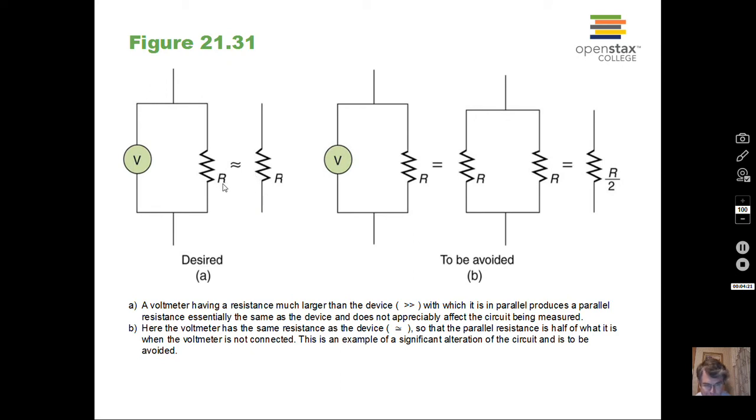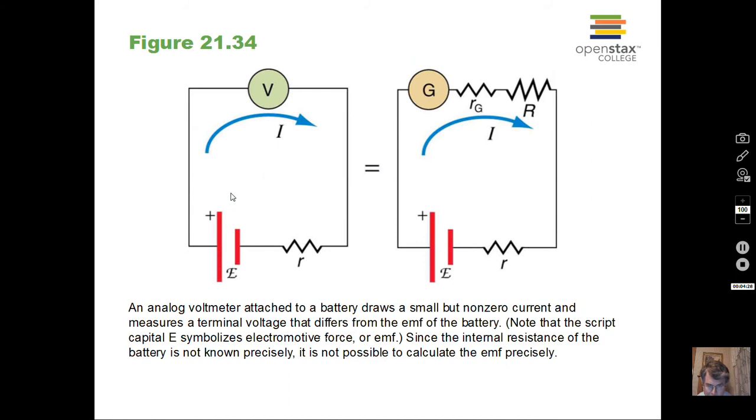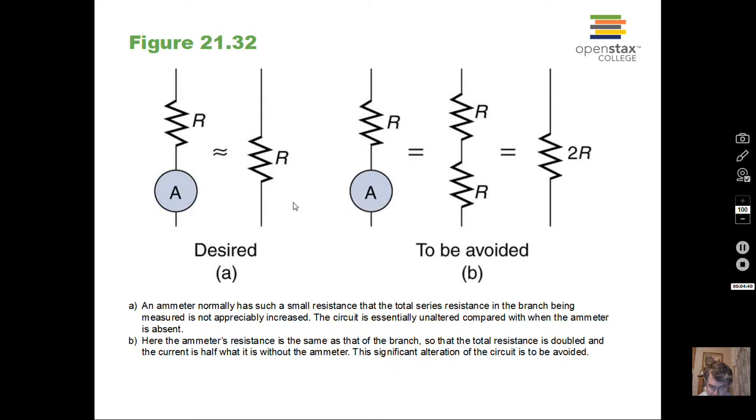Voltmeters are used in parallel, ammeters are used in series, and that's what we need to say about the meters here. Voltmeters we use in parallel measuring the voltage across some circuit element, ammeter we use in series. So know those concepts. For my class, we're not going to do calculations on how to build an ammeter or a voltmeter.